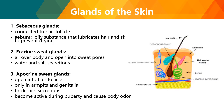The glands of the skin: first, the sebaceous glands, connected to the hair follicle, produce sebum — an oily substance that lubricates the hair and prevents it from drying out. Next, the eccrine sweat glands are found all over the body, open to sweat pores, and secrete water and salt secretions. The apocrine sweat glands open into the hair follicle, are found only in your armpits and genitalia, secrete thick rich secretions, become active during puberty, and can cause body odor.